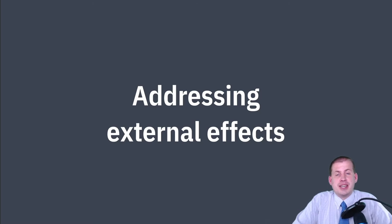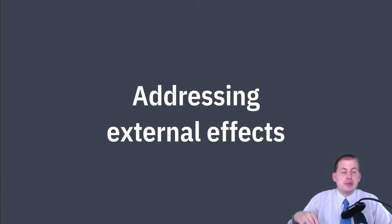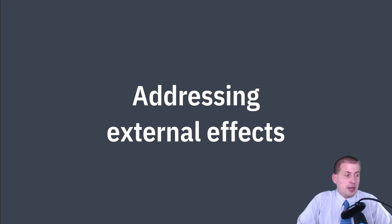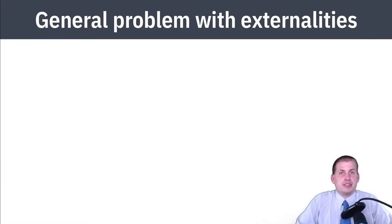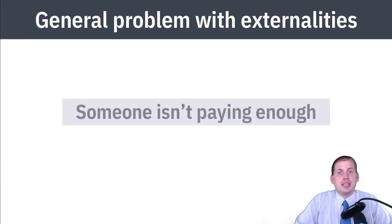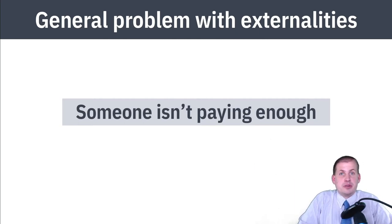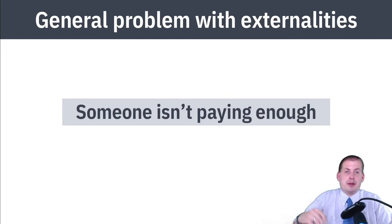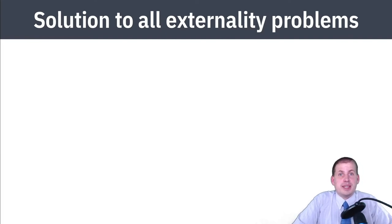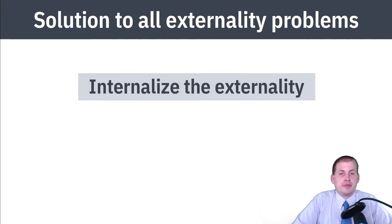How do we fix externalities? How do we make it so that negative externalities go away and we get the benefits of positive externalities? We want to get rid of pollution and encourage basic scientific research and vaccines. The main problem with externalities is fairly simple: somebody is not paying enough. If you're a factory and you're polluting, you're not paying for that pollution. The general solution is to make somebody pay.